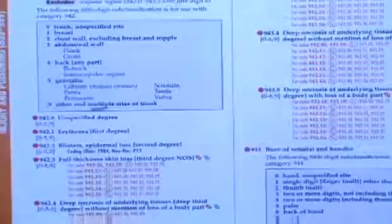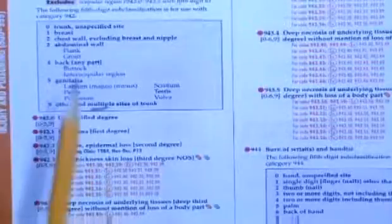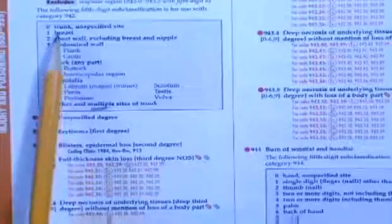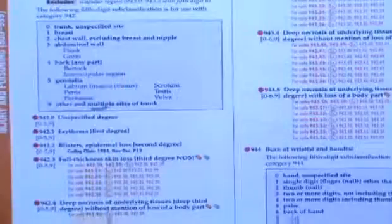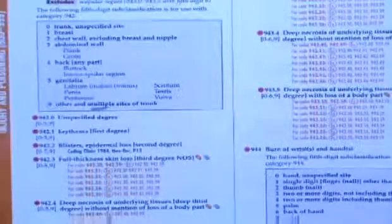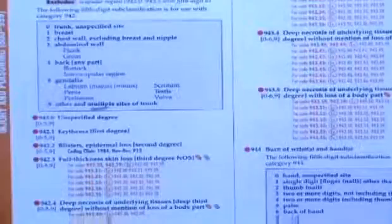But what do you do when you have two burns in the same category? What if I have a burn of the back and a burn of the breast? They're in the same category, right? So if the back was a third degree and the breast was a second degree, what the guidelines tell us is that you code the most severe burn first. So it's going to be 942.3 but